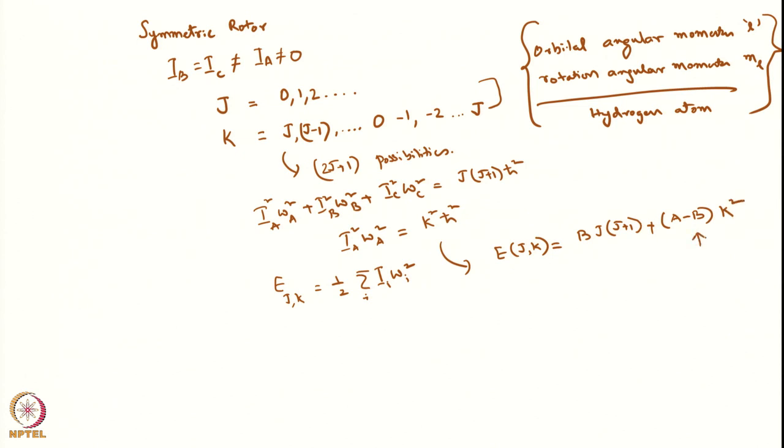When you have such an equation, you will see it depends on the absolute value of K — plus K and minus K will not differ. This is similar to ML values: just as ML does not change the energy in poly-electron atoms and only the L value changes the energy, similarly here the sign of K does not change the energy.